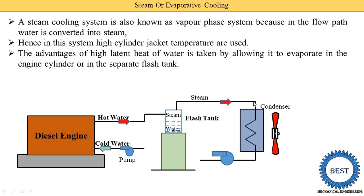Steam passes inside the tubes and air passes outside. The atmospheric air absorbs the heat from the steam, so the steam is converted into water. This water outlet is supplied to the pump and its temperature is reduced, making it cold water.